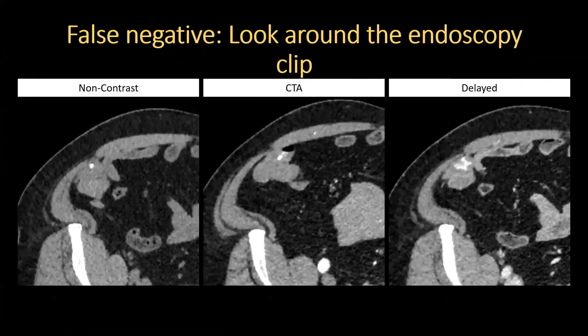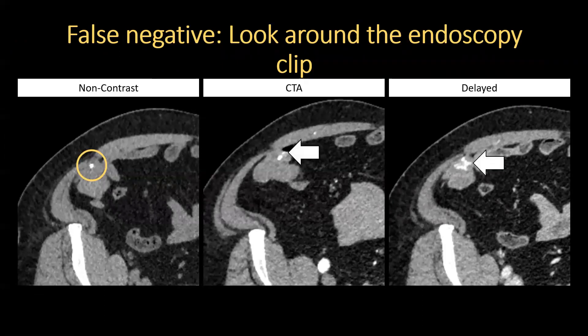This was a 65-year-old man who presented with bright red blood per rectum after a recent colonoscopy with polypectomy. The bleed was also not detected initially. On non-contrast images, we see a metallic object in the cecum — a hemostatic endoscopy clip from the recent polypectomy. The arterial blush of contrast around the endoscopy clip is quite subtle, but pooling of contrast on the delayed phase helps identify the post-polypectomy bleed. Focusing on the site of recent intervention is very helpful.